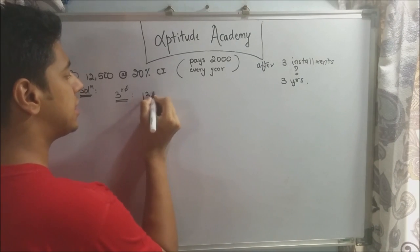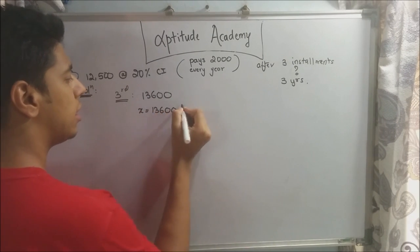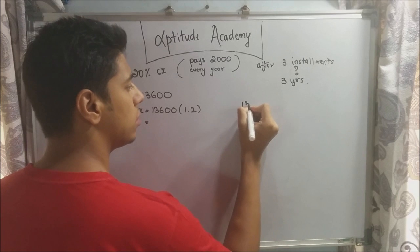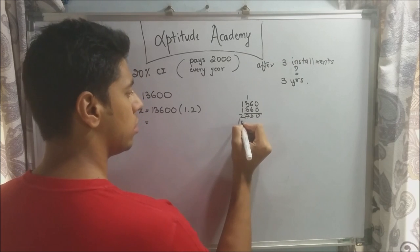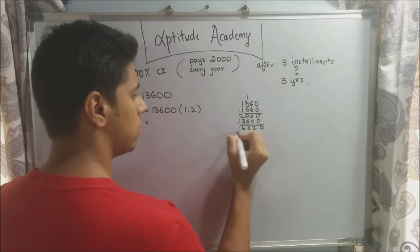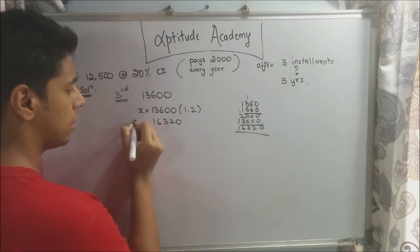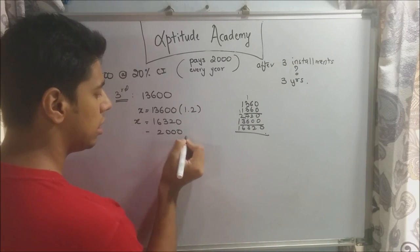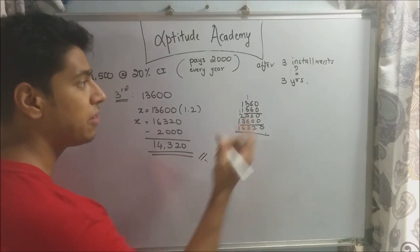For the third year, the principal is 13,600. X = 13,600 × 1.2 = 16,320. At the end, he pays the third installment of Rs. 2,000, so 16,320 − 2,000 = 14,320. This is his remaining debt after paying three installments.